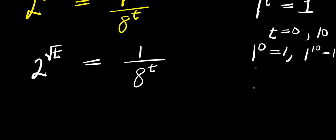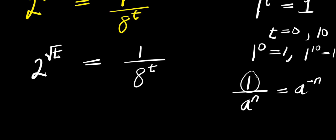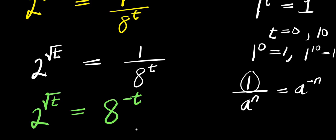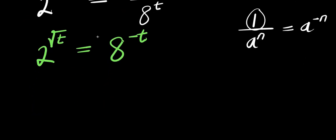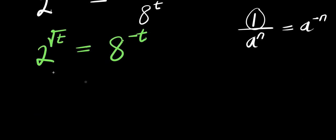Now remember, if you have 1 divided by 8 to the power of n, this equals 8 to the power of negative n. So from here the bases are different, so we need to ensure that the two bases are the same.